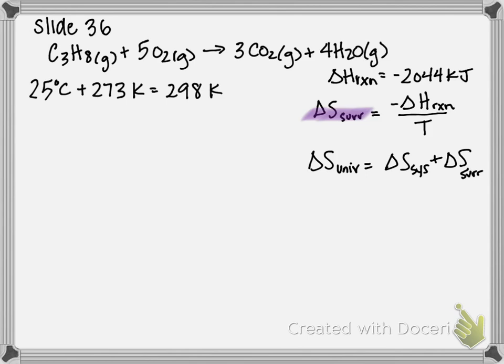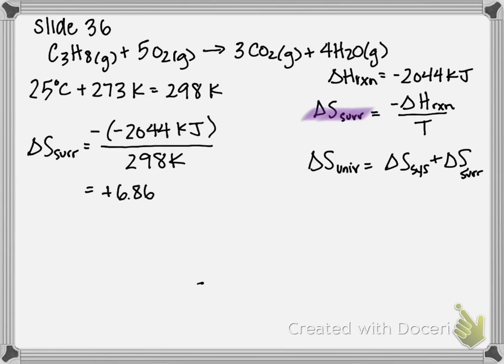So if we plug all of this in, we get that delta S of the surroundings is equal to negative of negative 2044 kilojoules over 298 Kelvin. The negative of a negative gives you a positive, so therefore my answer is positive 6.86 kilojoules per Kelvin.